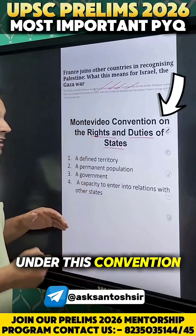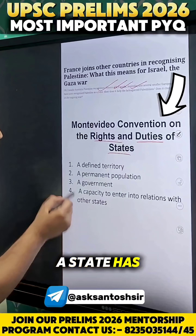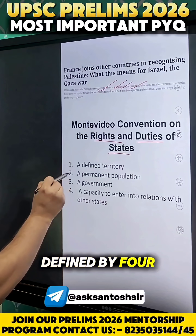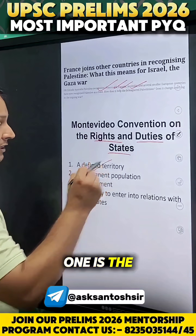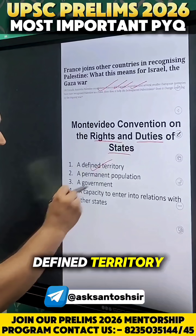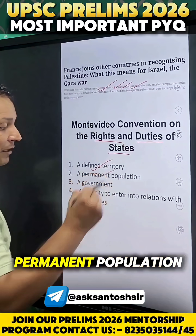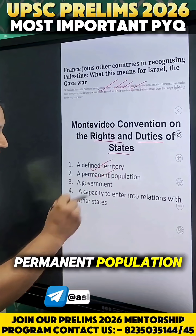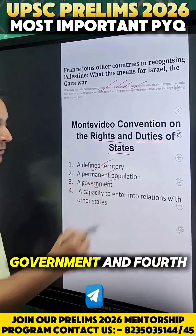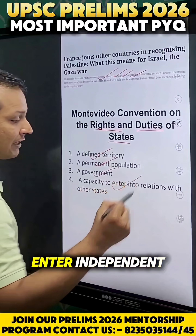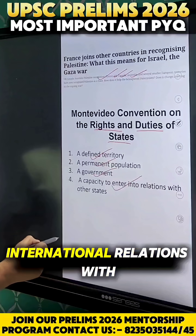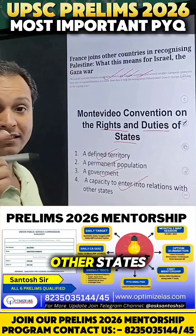Under this convention, a state is defined by four characteristics. The first one is a defined territory, the second one is permanent population, the third one is government, and the fourth is a capacity to enter independent international relations with other states.